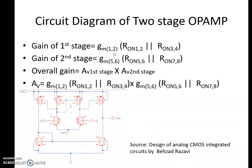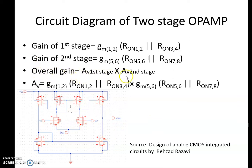The gain of the first stage is the transconductance of the nMOS of the operational amplifier multiplied by the parallel combination of the nMOS resistance and pMOS resistance of the differential amplifier. The gain of the second stage is the transconductance of the nMOS of the common source amplifier multiplied by the parallel combination of nMOS and pMOS resistances of the common source amplifier. The overall gain is the product of the first and second stage gains.